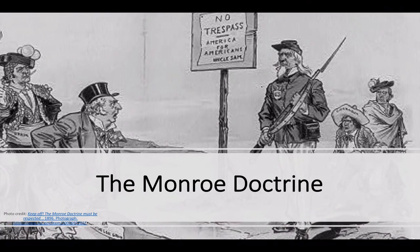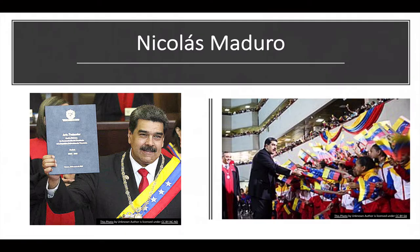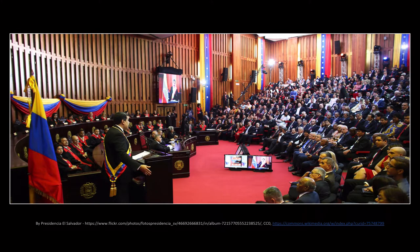On January 10, 2019, several heads of state, including the presidents of Cuba, Nicaragua, Bolivia, and El Salvador, attended the swearing-in ceremony of Nicolás Maduro for his second term as the president of Venezuela. However, many nations, including the United States, did not recognize Maduro as a legitimate leader. And nearly two weeks later, on January 23rd, President Trump recognized Venezuelan opposition leader Juan Guaido as the legitimate president.